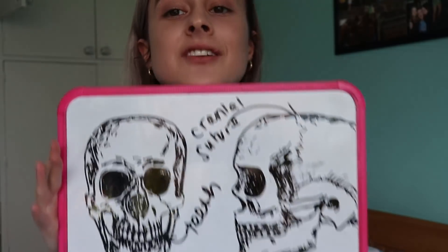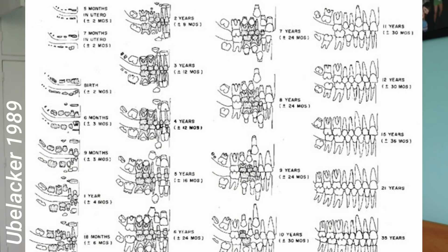The teeth are another super interesting element of the skull that you can use for ageing. In children, the teeth are the most accurate method of ageing a skeleton because that is when they grow. We know roughly the growth patterns of teeth and which ones come first, when they should be partially erupted, etc. In adults, we can look at the eruption of the third molar if it's a particularly young adult. If the wisdom teeth have erupted, then they are probably over the age of 21 or 22.